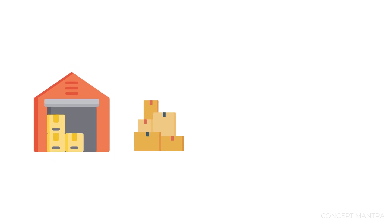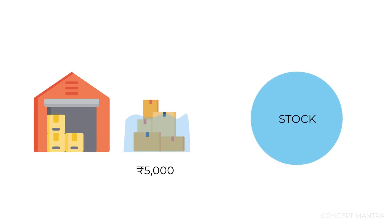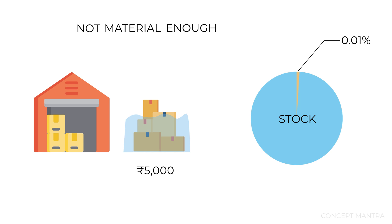Let me simplify the concept with an example. Suppose your company has lost some part of the inventory due to water leakage in your warehouse. The valuation of the inventory damaged is Rs. 5,000. Assuming that your company is not a small company and has stock worth Rs. 5 crores on average — for a company with a stock valuation of Rs. 5 crores, a damage worth Rs. 5,000 is not significant since it comprises only 0.01% of the entire value. This event is not material enough to be reported in the financial statements as it is not going to affect the decision-making process for any user.